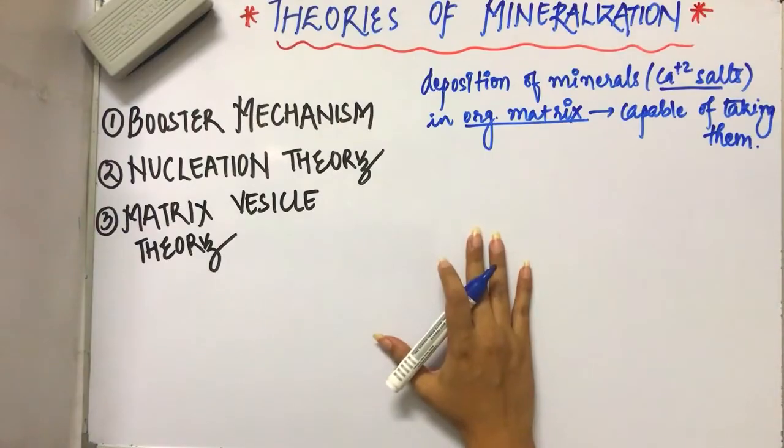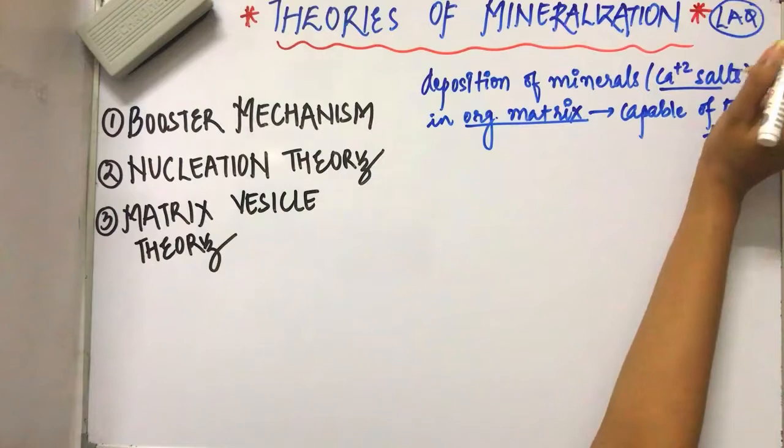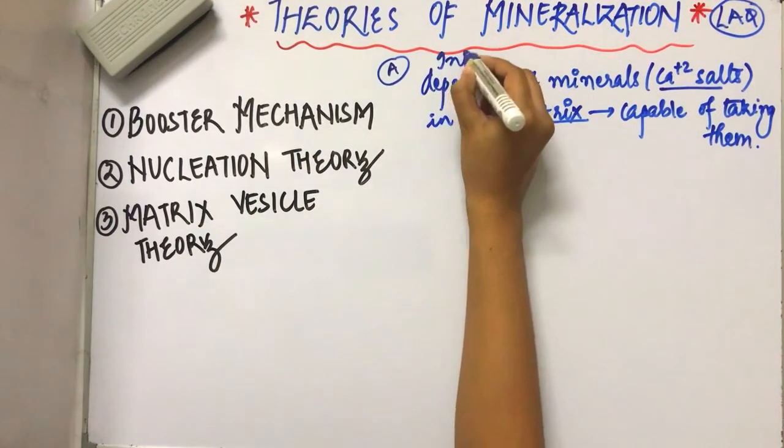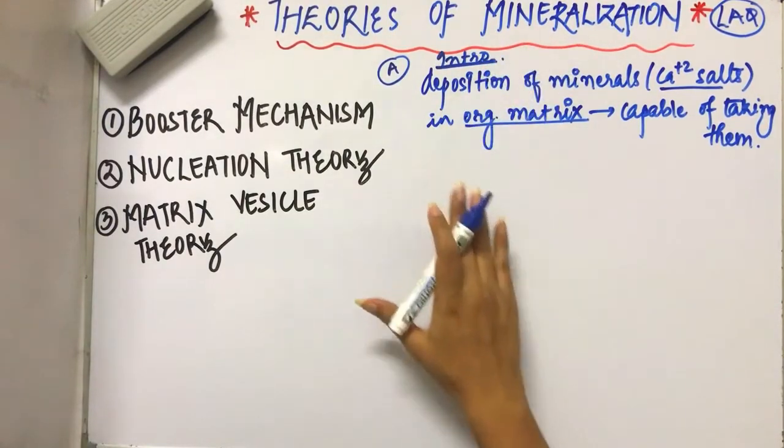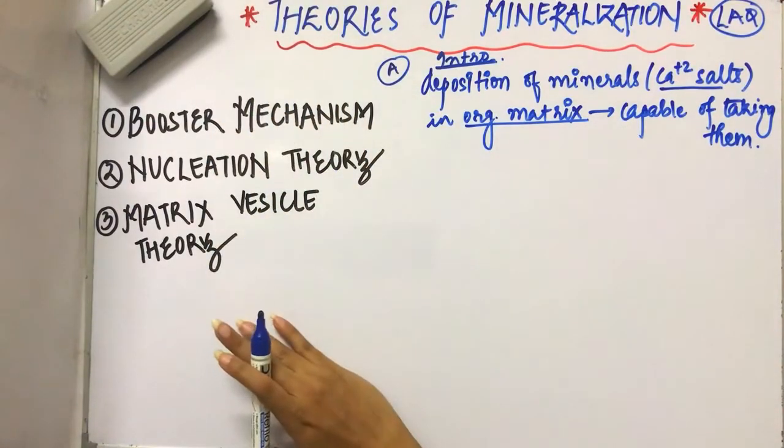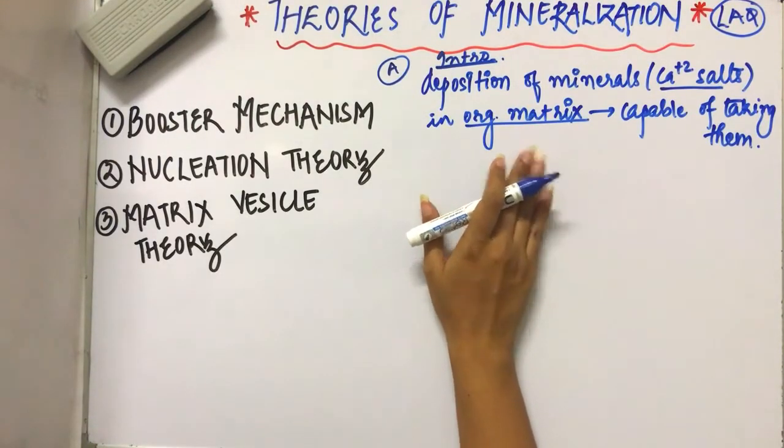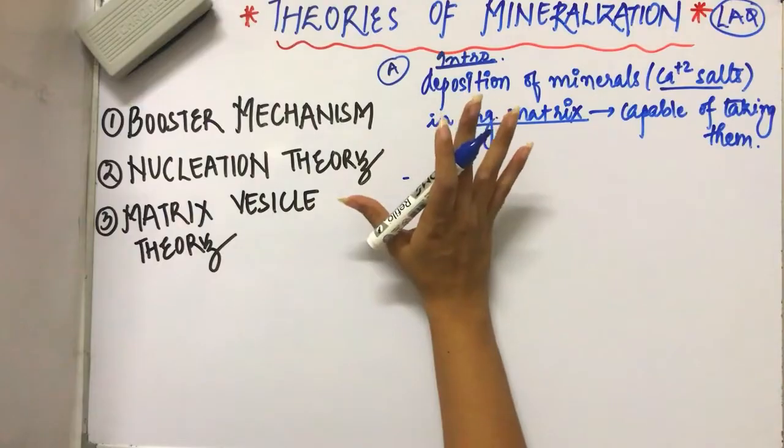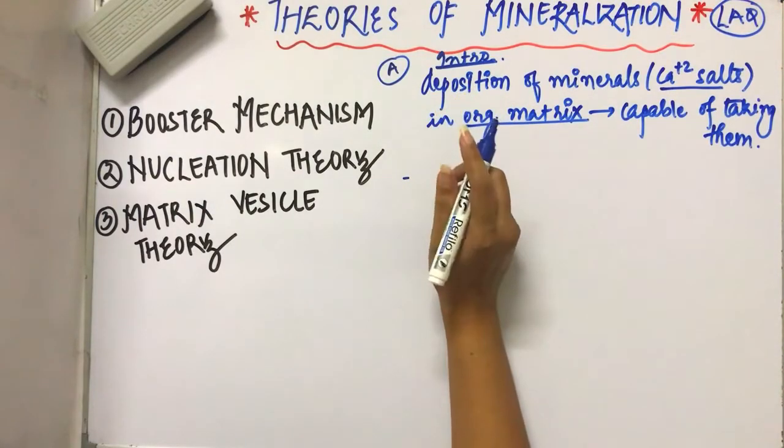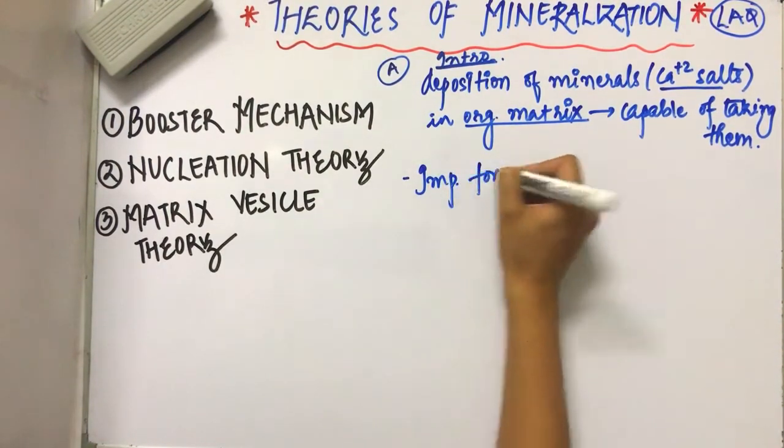Okay, theories of mineralization is one of the most commonly asked long answer questions. So first of all, you need to write the introduction part. In the introduction, explain what is mineralization, then its importance and some other points, and then you need to explain all the theories. This is what mineralization is: deposition of minerals, example insoluble calcium salts, in the organic matrix which is capable of taking them. And what is the importance? Why is the mineralization procedure important in our body to occur? Because it is important for hard tissue formation.